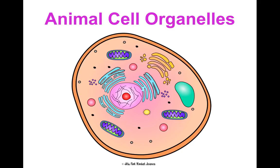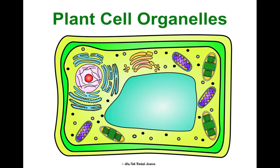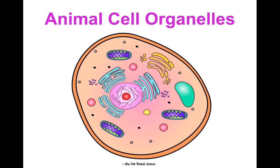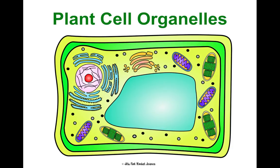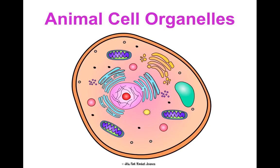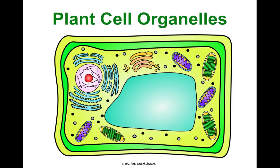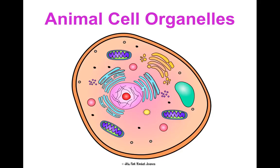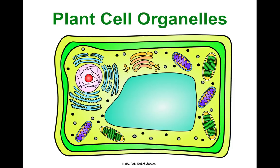Some organelles are specific to animal cells, and some are specific to plant cells. But as we flip between pictures of animal and plant cells, you'll notice that some organelles appear in both. As we go through them, I'll make sure to indicate if an organelle is solely in an animal cell or solely in a plant cell. If I don't distinguish between the two, it exists in both.